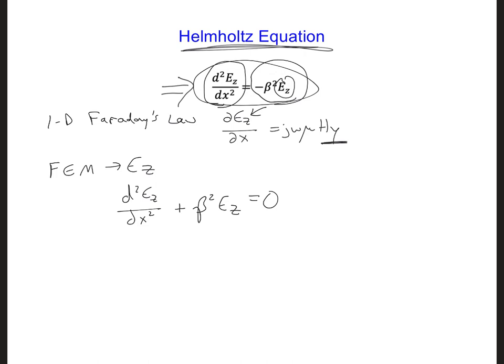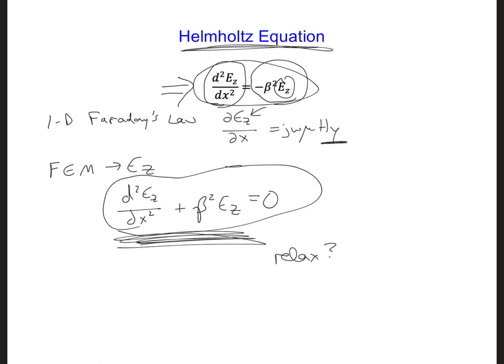And unfortunately, in general, especially for complex scenarios in two and three dimensions, it's too computationally demanding for us to try to obtain a perfect solution where this whole quantity is equal to zero for all positions in space. So if it's too computationally demanding to enforce that this quantity here on the left is exactly equal to zero in all positions in space, do you have any ideas of how we can relax this requirement while still obtaining a reasonably accurate solution?